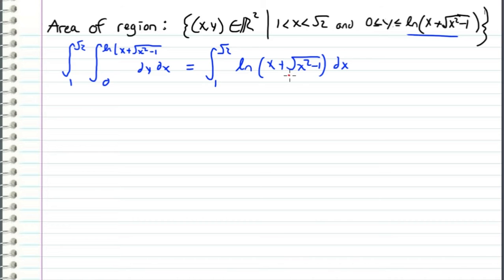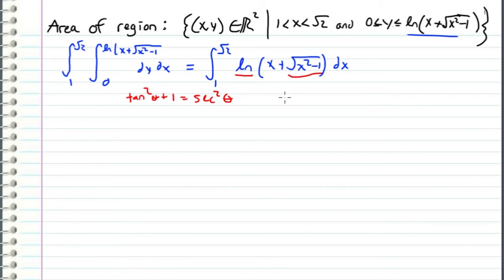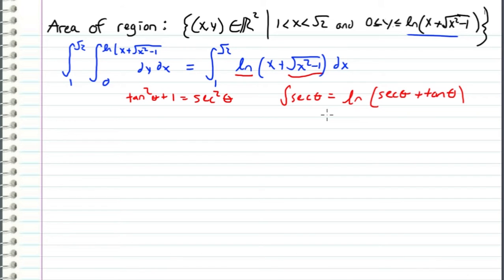Instead, what I recognize is I've got a square root of x squared minus 1 term and a natural log term. From practice and experience, I know I can take advantage of the fact that tan squared theta plus 1 equals secant squared theta. Also, the integral of secant theta equals the natural log of secant theta plus tan theta. I see a natural log here, and I can get a natural log working with secant theta. I also see the square root of x squared minus 1 term, which could simplify if I plug in secant theta. So I'm going to use trig substitution and substitute secant theta for x.